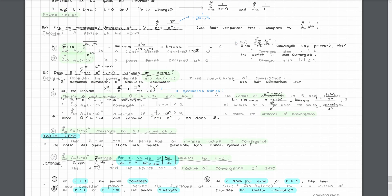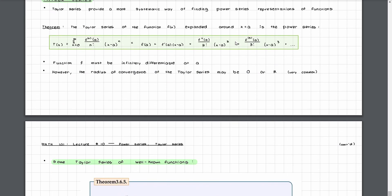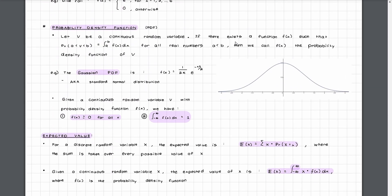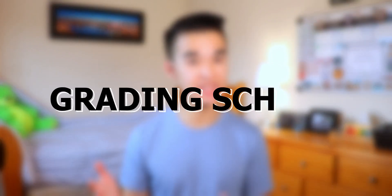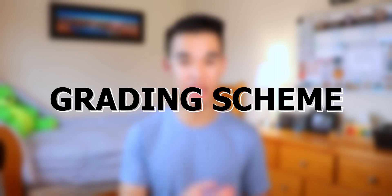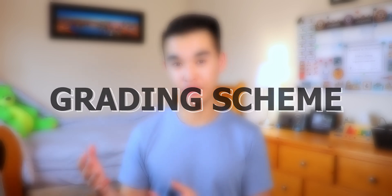After that, most of the rest of the course is dedicated to convergence and divergence, sequences and series, and multiple tests that can be used to determine if something converges or not. The last bit of MATH 101 covers power series, Taylor series, and probability.